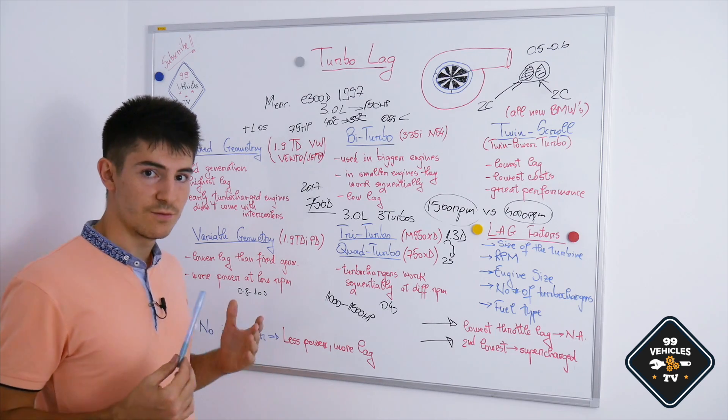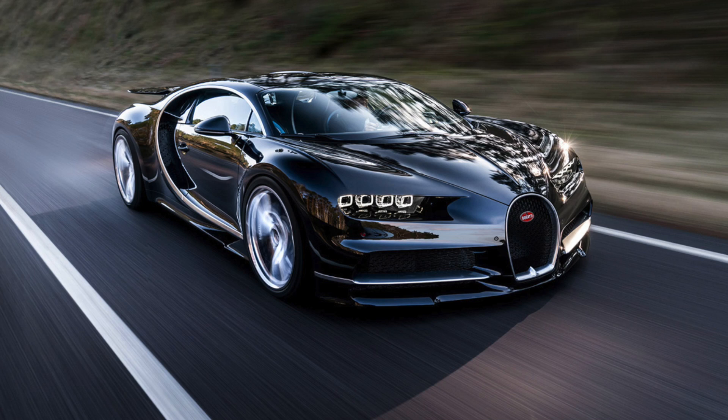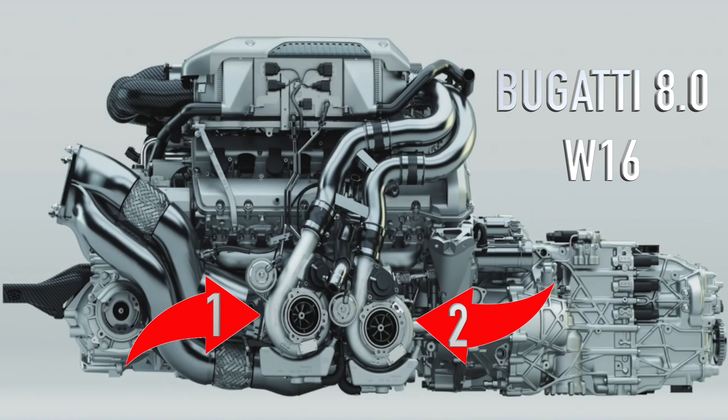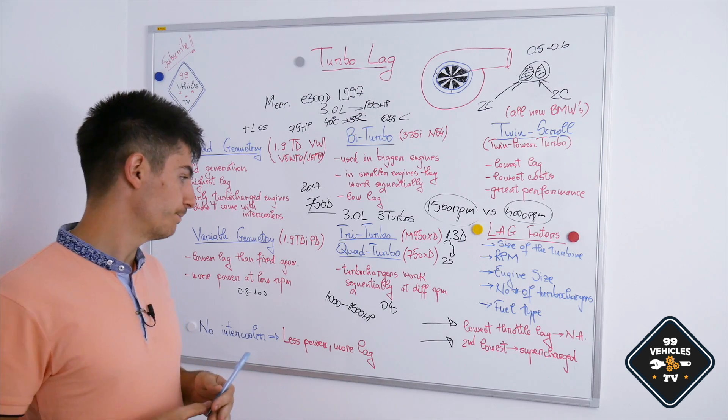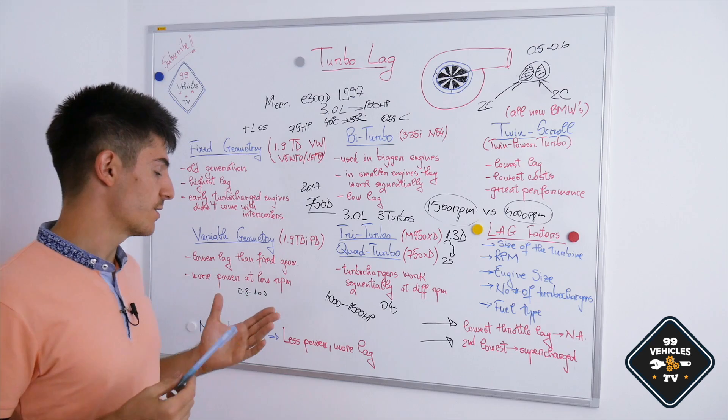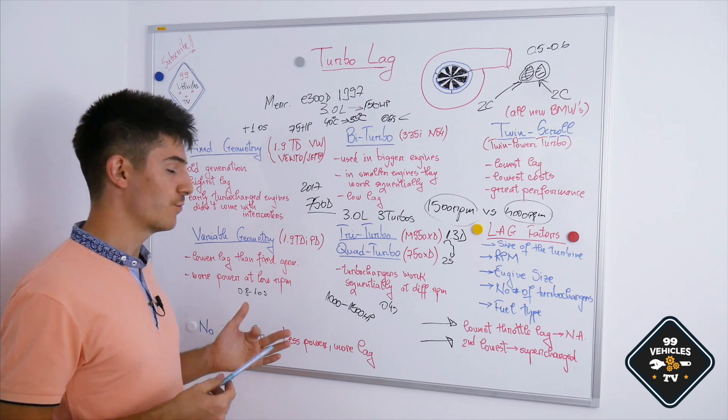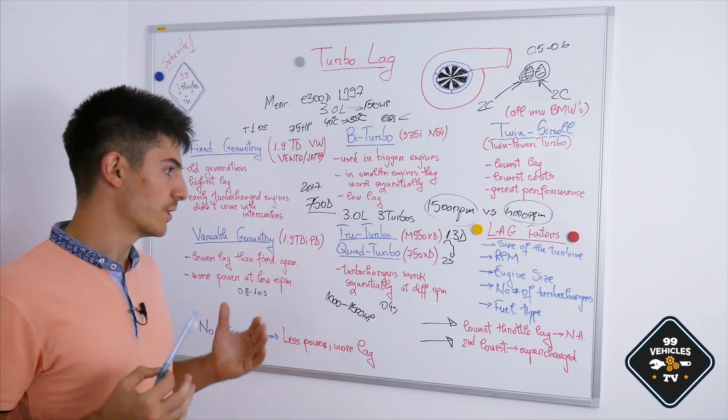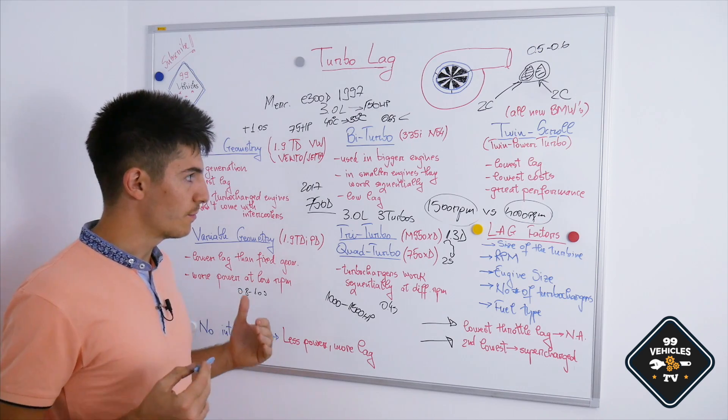Also, the Bugatti Veyron and Chiron have four turbochargers on an 8-liter W16 engine with 16 cylinders in a W layout. In these kind of engines with three, four turbochargers, lag is small. We have around 0.4 to 0.5 seconds delay before we feel the maximum power.